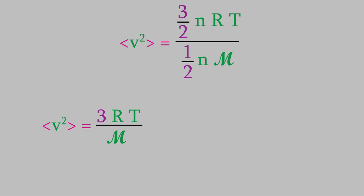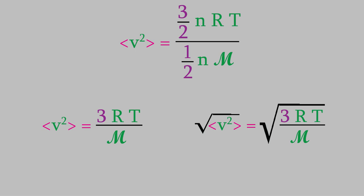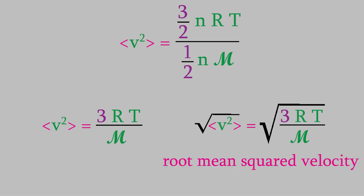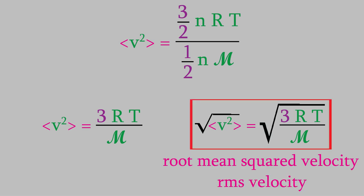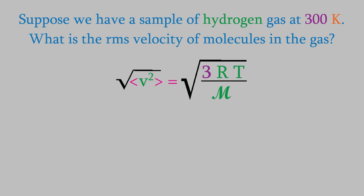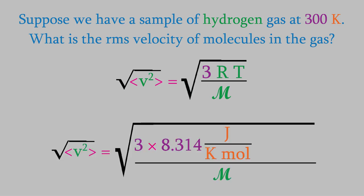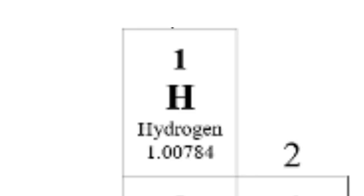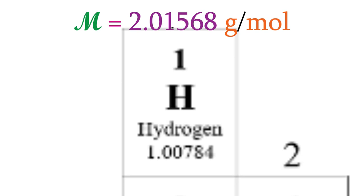As you can tell, this gives us a squared velocity. We're usually more interested in just a velocity, so we take the square root of this property. The result is called the root-mean-squared velocity, or RMS velocity. Let's try using this equation. Suppose we have a sample of hydrogen gas at 300 Kelvin — what will be the RMS velocity? R is 8.314 J per K·mol, the temperature is 300 K. Remember, hydrogen gas is H2, not just H, so using the periodic table, H2 weighs 2.01568 grams per mole.